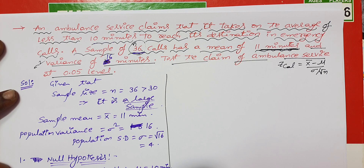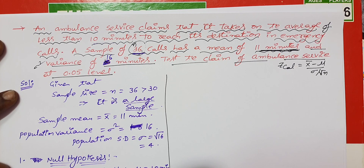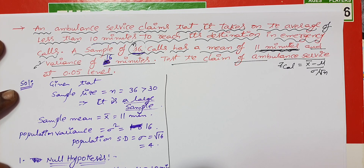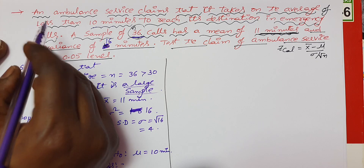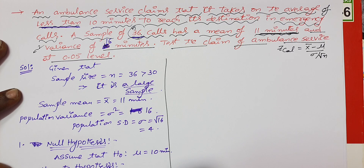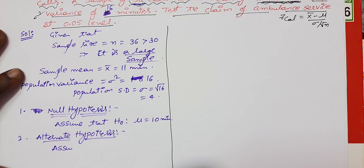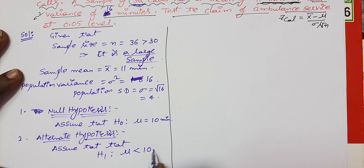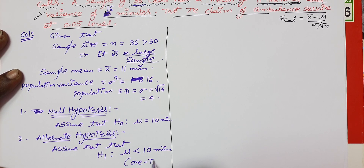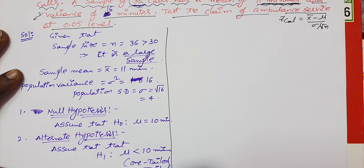The alternate hypothesis H1 claims that the mean is less than 10 minutes. Since the problem statement uses the words 'less than', this is a one-tail test.